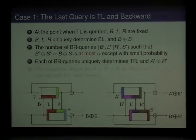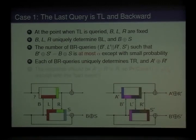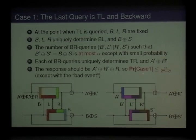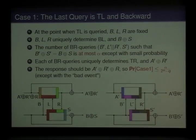Once each such BR query is given, it uniquely determines the triple to be placed at the TR position and uniquely determines A prime plus R prime. Now, in order for a collision to occur, its response should be the same as A prime plus R prime plus R, so that these two values are the same. So the probability of case one is upper-bounded by alpha over 2 to the n minus Q, except with the bad event of a multi-collision with multiplicity greater than alpha.